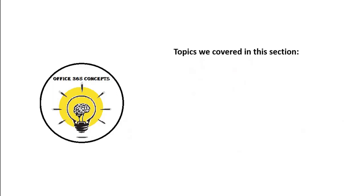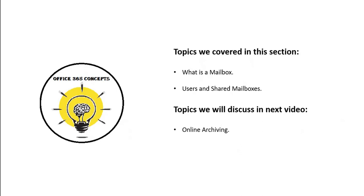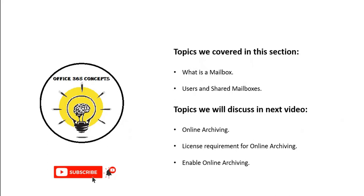We have discussed what is a mailbox, what is a user mailbox, and what is a shared mailbox. We have also discussed how a shared mailbox is used as a common mailbox where multiple users need access. In the next session, I will be discussing online archiving (also known as in-place archiving), how it works, what licenses are required to use online archiving in Exchange Online, and how you can enable online archiving for your mailboxes. If you have learned something new from this session, please write in the comments and subscribe to the channel. Thank you for watching.